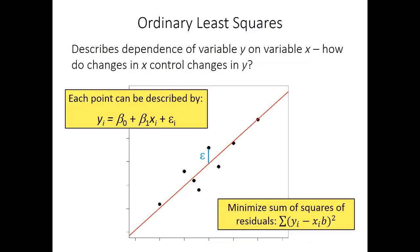To recap, linear regression describes the dependence of one variable — traditionally on the y-axis — on another variable on the x-axis. Ordinary least squares, or OLS regression, fits a line by minimizing the squared distance between the best fit line and all points. That distance between the expected line and the observed point is called the residual, typically given the Greek letter epsilon.